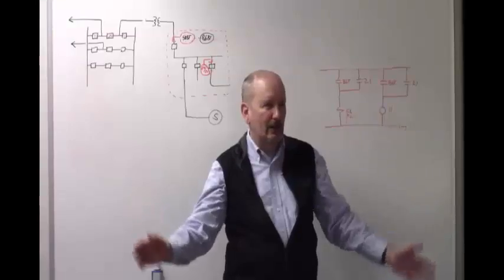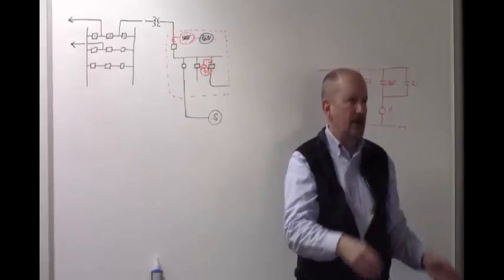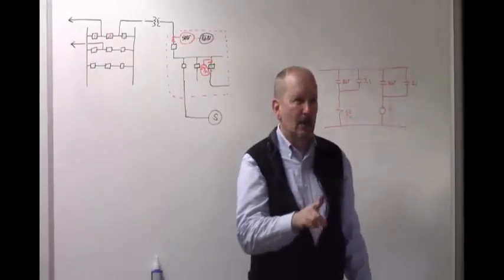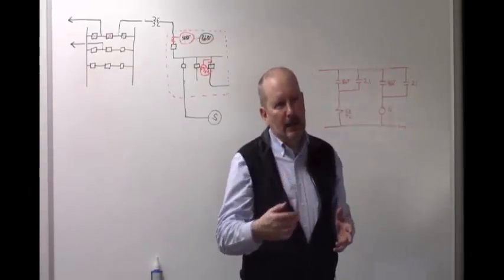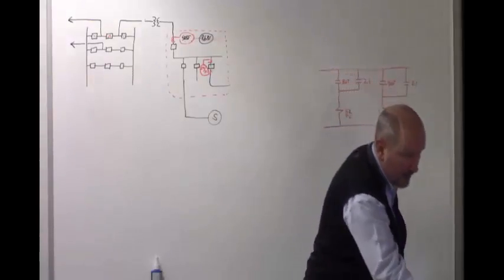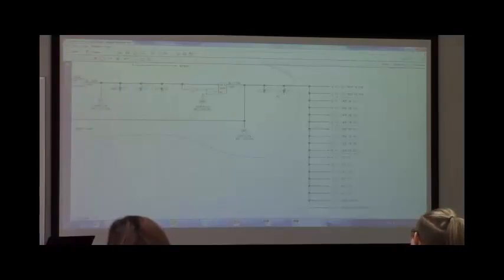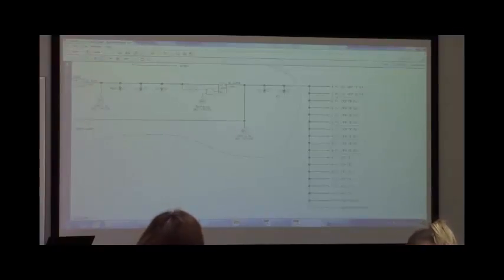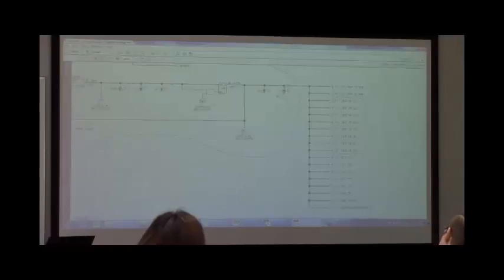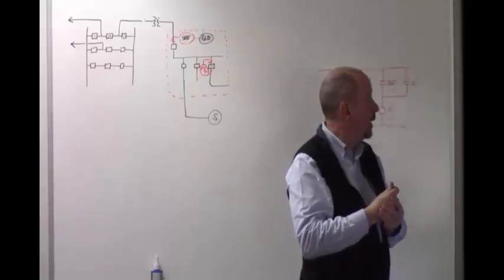When a breaker failure scheme operates, it happens faster than human perception — the whole thing is over in about 10 to 12 cycles. There are also LED indicators on the front face of the relay visible in the logic diagram; most of them are used for testing the device rather than operational indication.